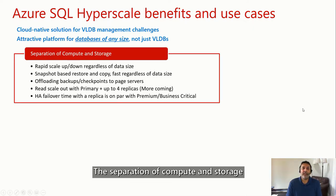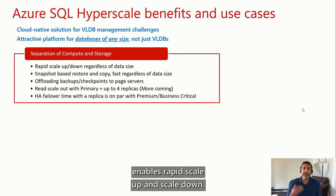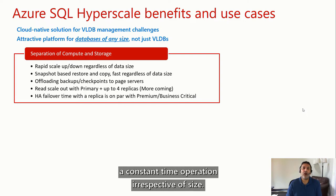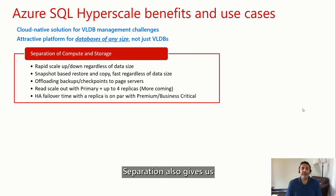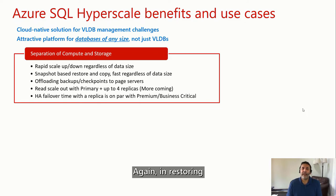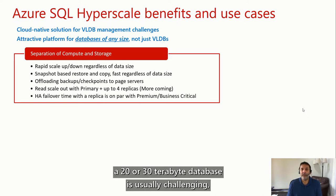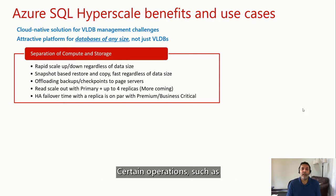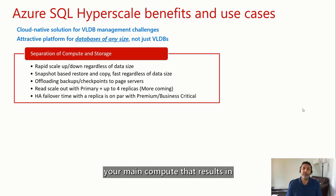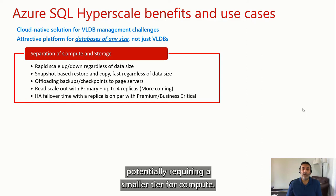The separation of compute and storage enables rapid scale-up and scale-down. So if you have periods where you're not using the database, scaling up and down is a constant time operation irrespective of size. Separation also gives us snapshot-based backup and restore functionality. Restoring a 20 or 30 terabyte database is usually challenging — that's not the case with Hyperscale. Certain operations such as checkpoints and backups are offloaded off your main compute, resulting in potentially requiring a smaller tier for compute.